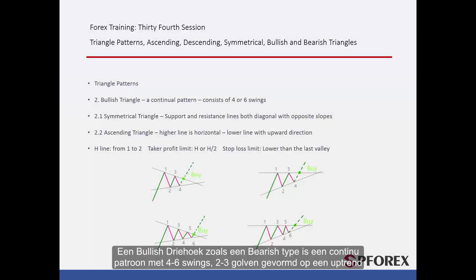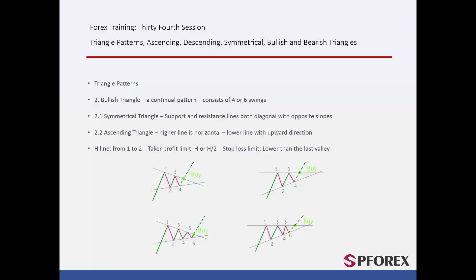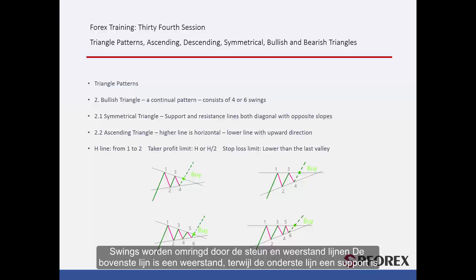A Bullish Triangle, like the bearish type, is a continuation pattern with 4–6 swings and 2–3 waves, formed on an uptrend. Swings are surrounded by the support and resistance lines, where the upper line is a resistance and the lower line is a support.